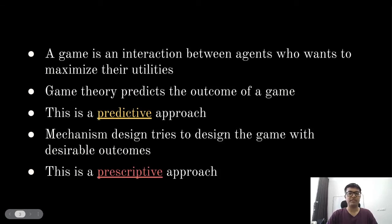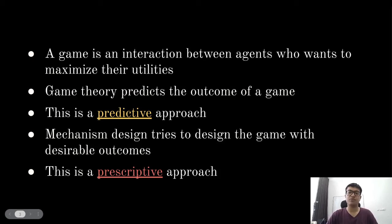A game is defined as an interaction between agents who always want to optimize their own objectives. In Game Theory, we provide predictive guarantees about the outcomes of a given game. In Mechanism Design, we flip the question and try to design protocols or algorithms that we call Mechanisms, and we set the rules of the game.